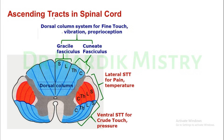Now the sensory tracts — a rough overview. There are three main tracts: the dorsal column system, the spinothalamic tract, and the spinocerebellar tract. The dorsal column system, also called the dorsal column–medial lemniscus system, carries fine touch including tactile localization and discrimination, vibration sensation, and proprioception. These fibers run in the gracile fasciculus and cuneate fasciculus on the dorsal side of the spinal cord. The spinothalamic tract includes the lateral spinothalamic tract for pain and temperature, and the ventral spinothalamic tract for crude touch and pressure.